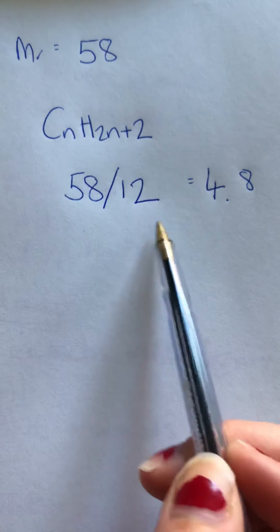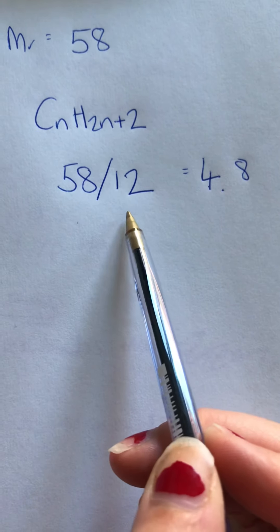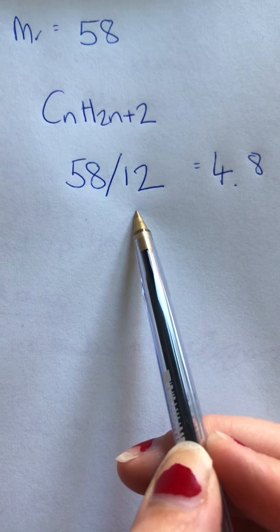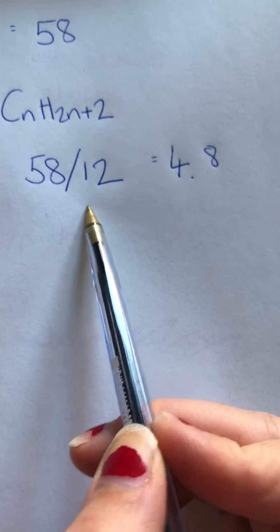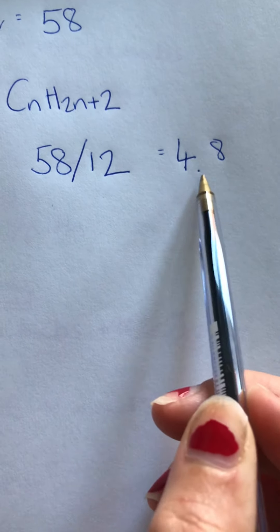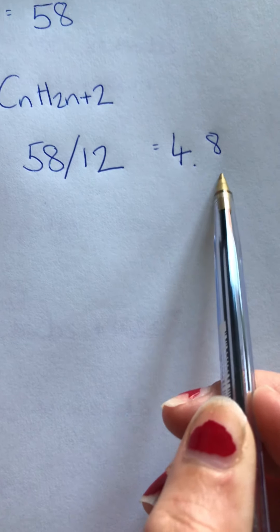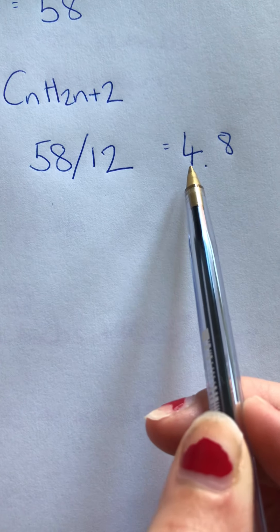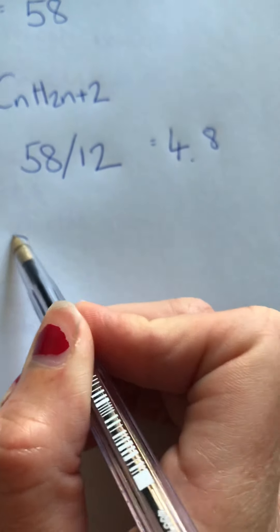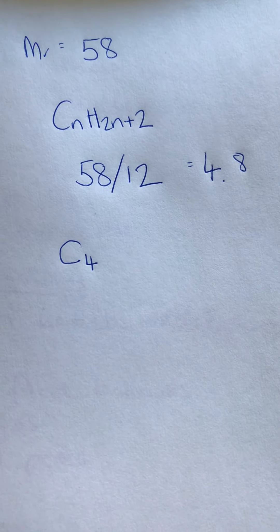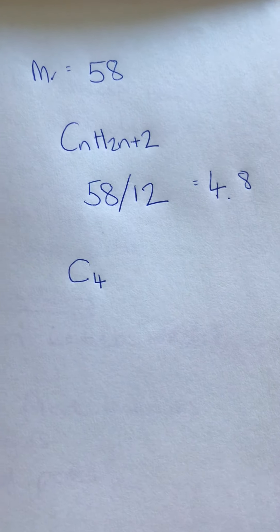Which means that we're going to divide the Mr by 12. The reason we're dividing it by 12 is because 12 is the mass number for carbon. Now if you do that you will get 4.8. You can't have 0.8 of a carbon and you can't round up because you can't just magically have 0.2 of a carbon, so we're going to say that this formula has four carbons.